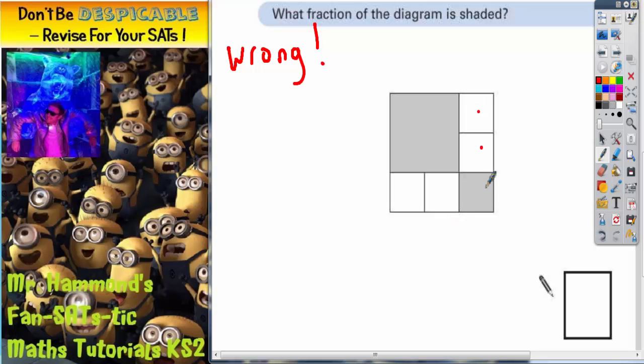Well the wrong way is to count the number of squares and then say how many we've got shaded. So we've got 1, 2, 3, 4, 5, 6 squares. And so it would be out of 6 and there is 1, 2 squares shaded, therefore the answer is 2 out of 6.